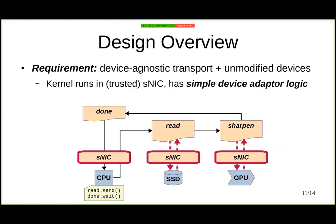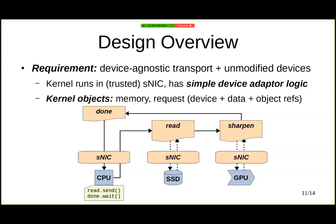If you look closely here on the left, you will see that the CPU does not need any adapter logic, because in fact the CPU is fully programmable and we can implement it there as part of the application code. Each of the requests on the graph is offered as request objects by the Caladan kernel. Each request basically points to the target physical device where we want to send it, and can contain some immediate data as well as references to other objects in the system. For example, the read request has a reference to the sharpen request, so that Caladan knows what to trigger once the read operation has finished.